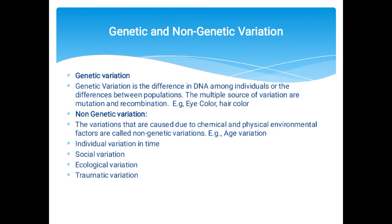Non-genetic variations are variations caused due to chemical and physical environmental factors like light, pressure, and temperature. For example, age variation. There are furthermore types of non-genetic variation: individual variation in time, social variation, ecological variation, and traumatic variation.